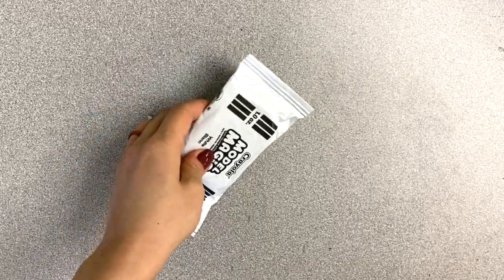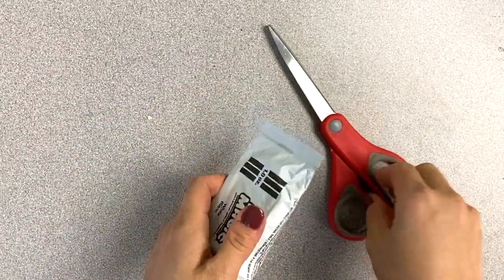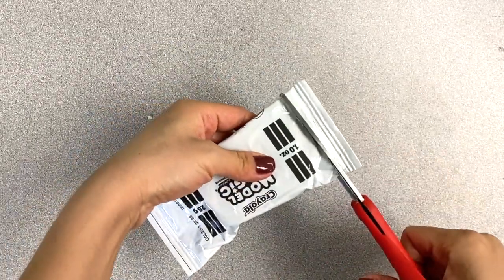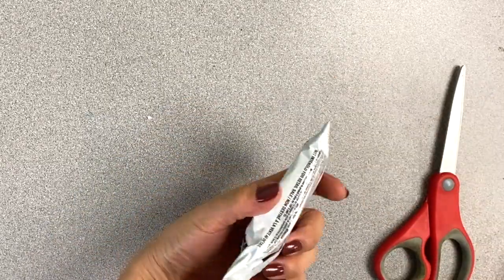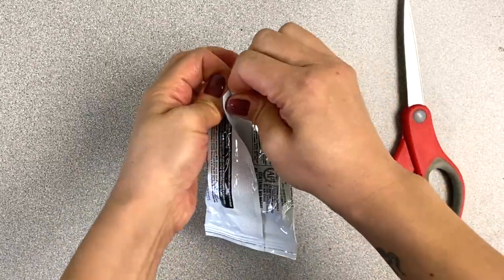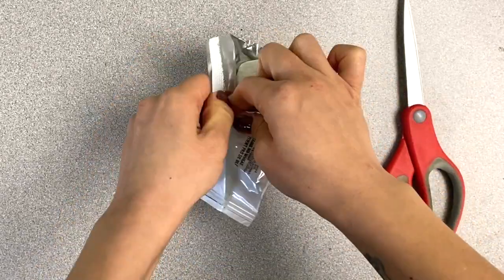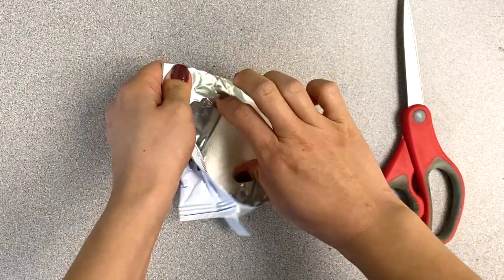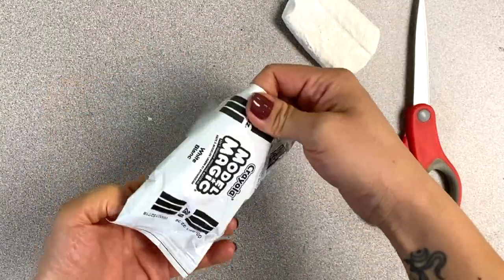The first thing we're going to do is open up the model magic pack. You can just pull it apart to open it or you can use the scissors and cut it open. Just make sure you're keeping the wrapper because we are going to wrap up the other half of the clay in just a minute.